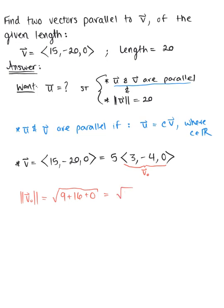So we need a new vector U that is 4 times this length. So if we define vector U as being 4 times this vector V naught, or 4 multiplied by the vector 3, negative 4, 0, which gives us 12, negative 16, 0.